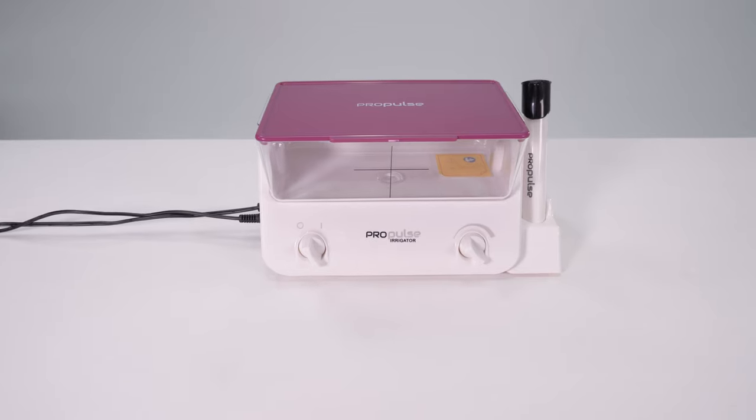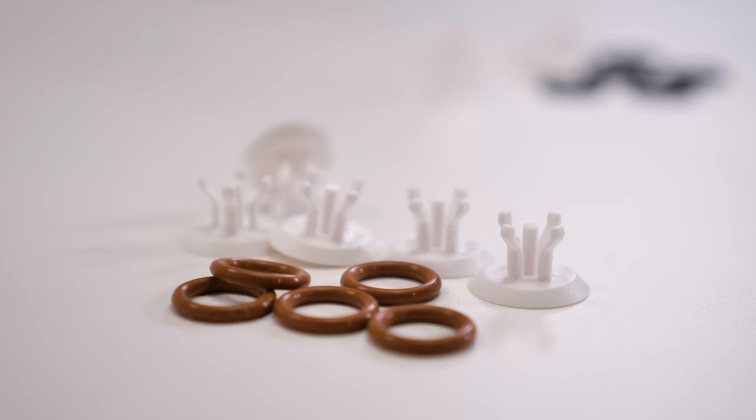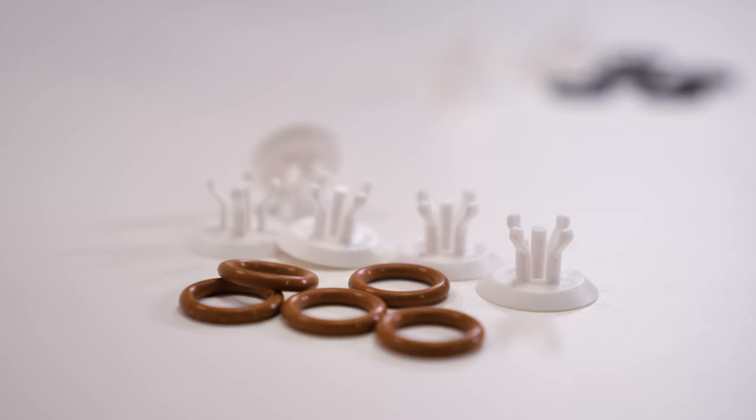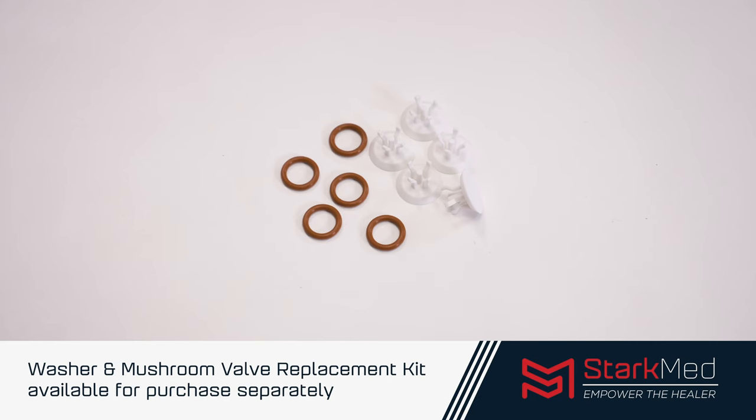The current PP17 purple lid units and the previous G5 black lid units use the orange washer and mushroom valve kit. These can be purchased separately in a five-piece replacement pack.